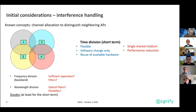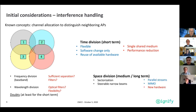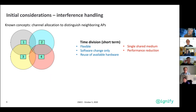Therefore we were looking towards time division, where time can be flexibly divided. With the current product we only need to change the software and can reuse the available hardware. The penalty is that you have a single shared medium that has to be shared, so there may be some performance reduction. For the longer term, we are aiming at sectorization or steerable narrow beams, which opens new possibilities like parallel streams using MIMO, but with the penalty that we need to build new hardware. For the time being, we are focusing on the time division approach.